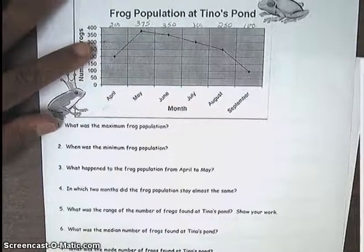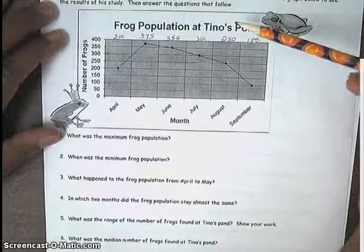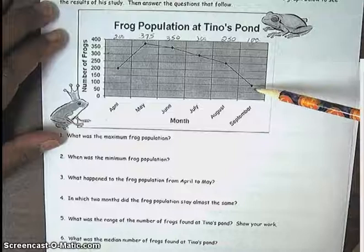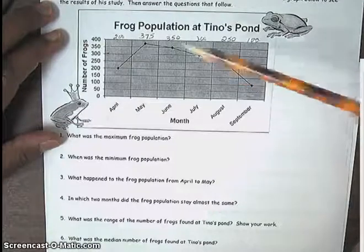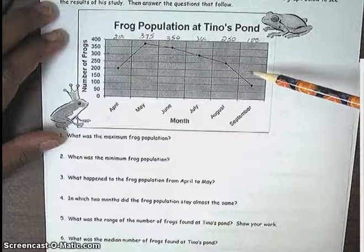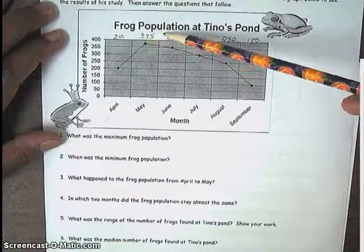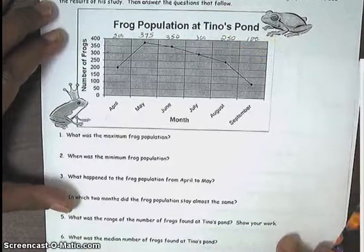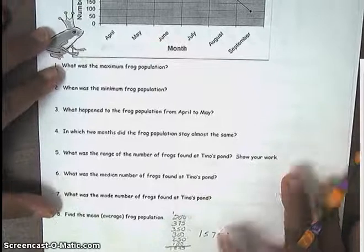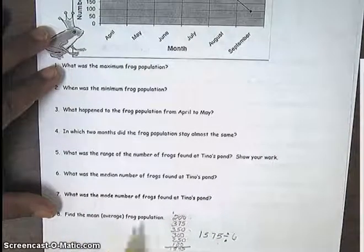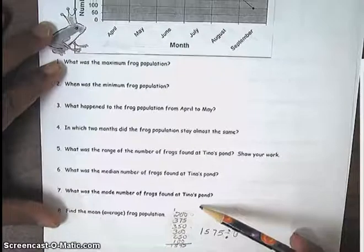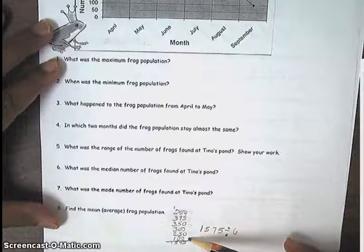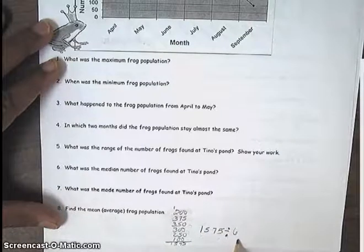On the back side of your homework, you should have frog population at Tino's Pond. Except this graph now is a line graph. And similar to what I've done on the other side, I've identified my major points of data. So I have 200, 375, 350, 300, 250, and 100. And at the bottom of this particular question, on this side of the question, the last question says, find the mean average of frog population. So we did the same thing. We're adding 200, 375, 350, 300, 250, 100. And that gives us 1,575 divided by 6.